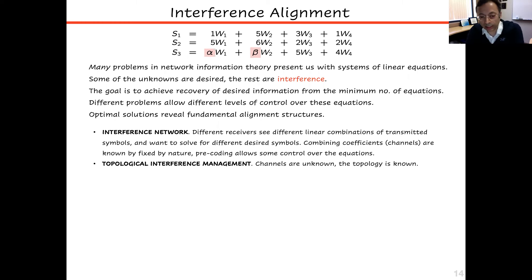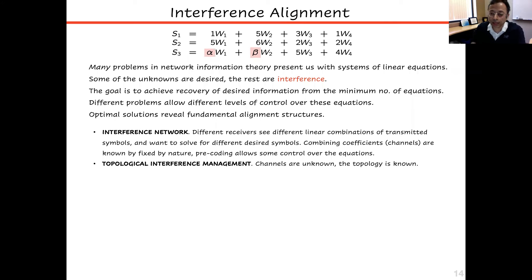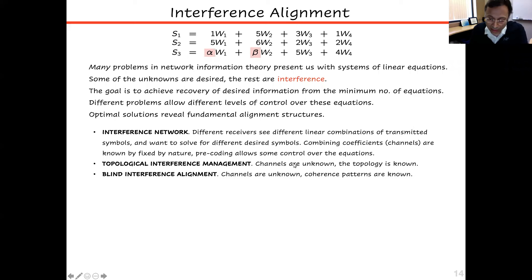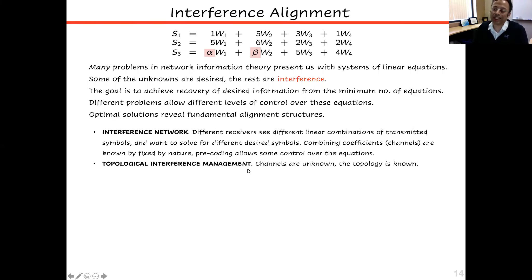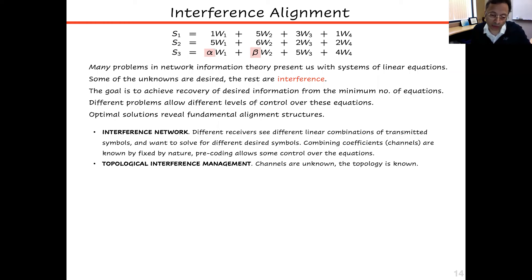Another setting: suppose the transmitters don't even know the channel coefficient values. The receivers always know the channels, but the transmitters don't. In the topological interference management problem, transmitters know the topology of the network — which channel coefficients are zero and which are non-zero, but not the actual non-zero values. Under just this knowledge, it's still possible to achieve interference alignment solutions.